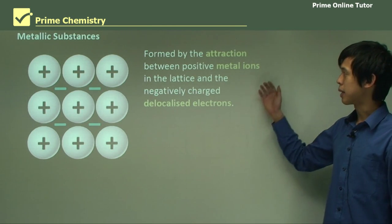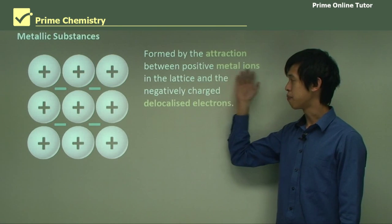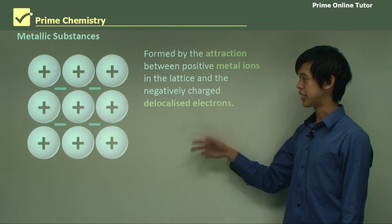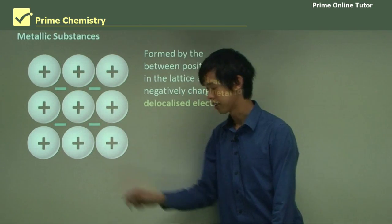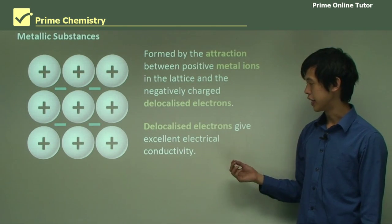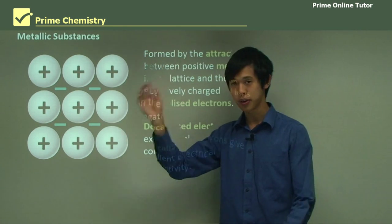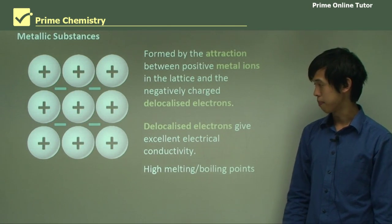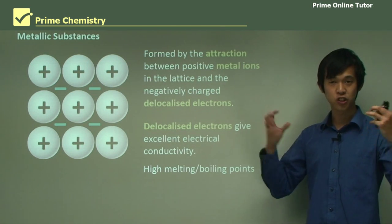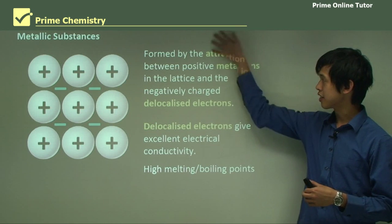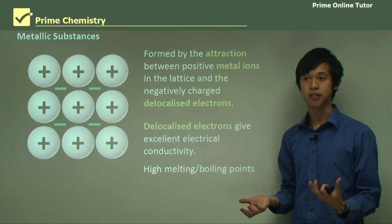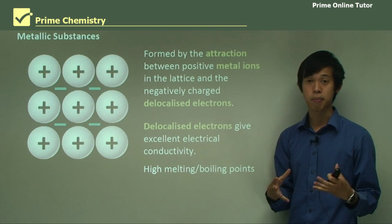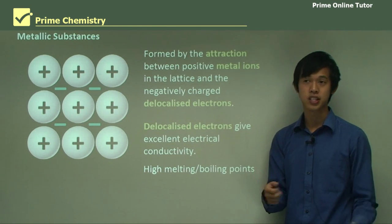We form metallic substances by the attraction between the positive metal ions — the nuclei — and the negatively charged delocalized electrons, which are these blue minus signs. The delocalized electrons give excellent electrical conductivity because they're free to move around all the way throughout the lattice. They have high melting and boiling points because the force of attraction is actually very large, and that means it takes a lot of energy to separate all of those bonds.